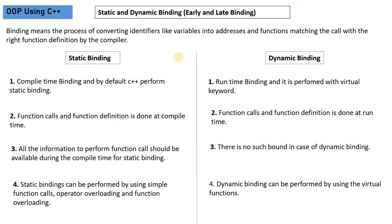Binding also involves matching a function call with the right function definition, as determined by the compiler. So if we have a function call, the compiler connects that call to the correct function definition. There are two types of binding.